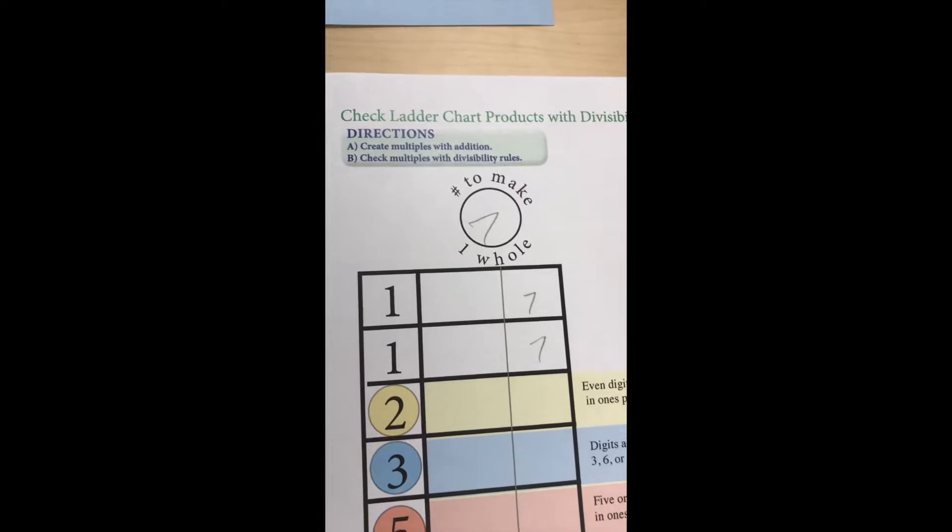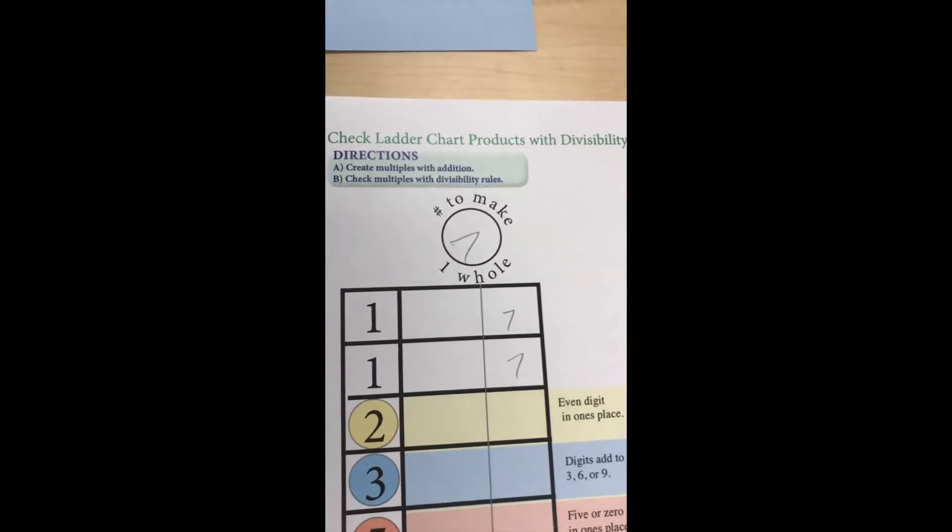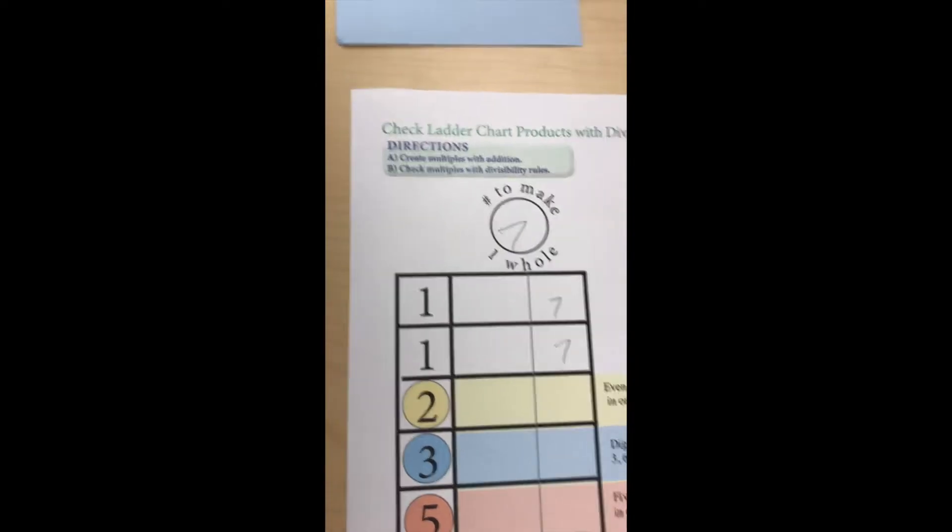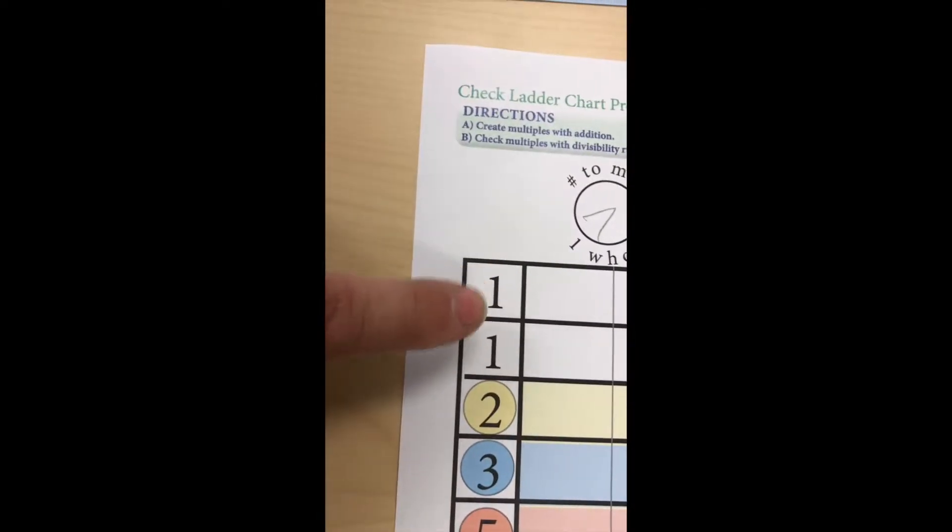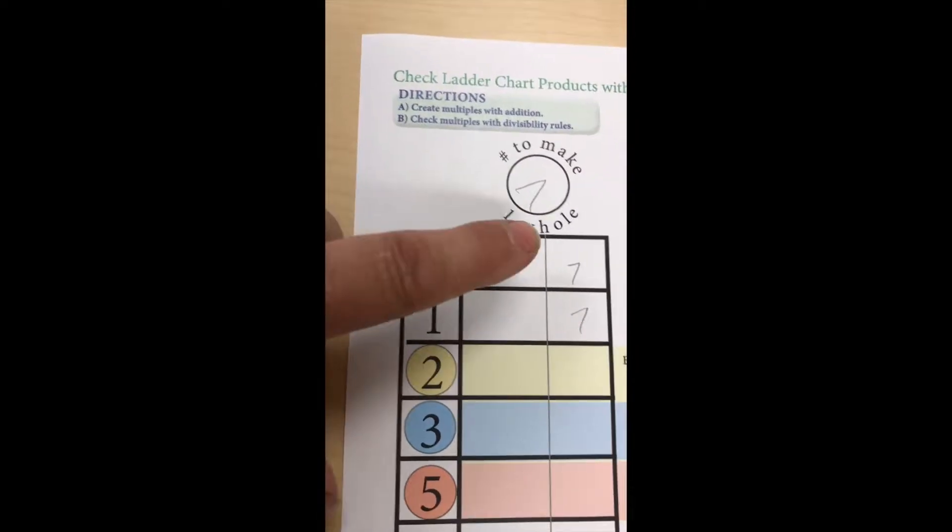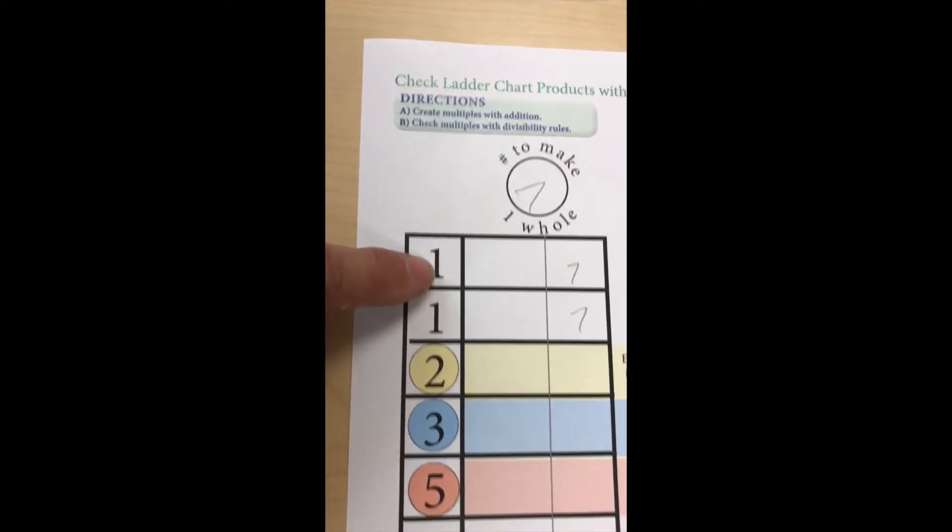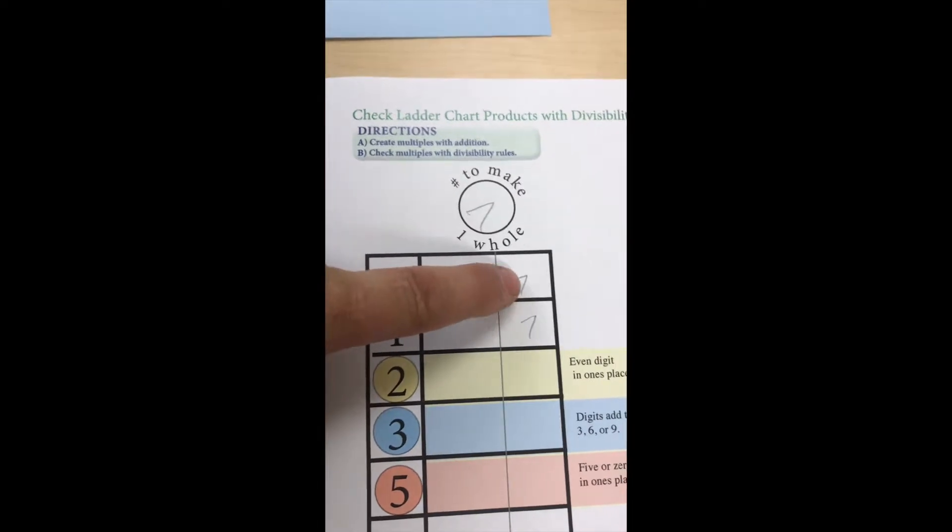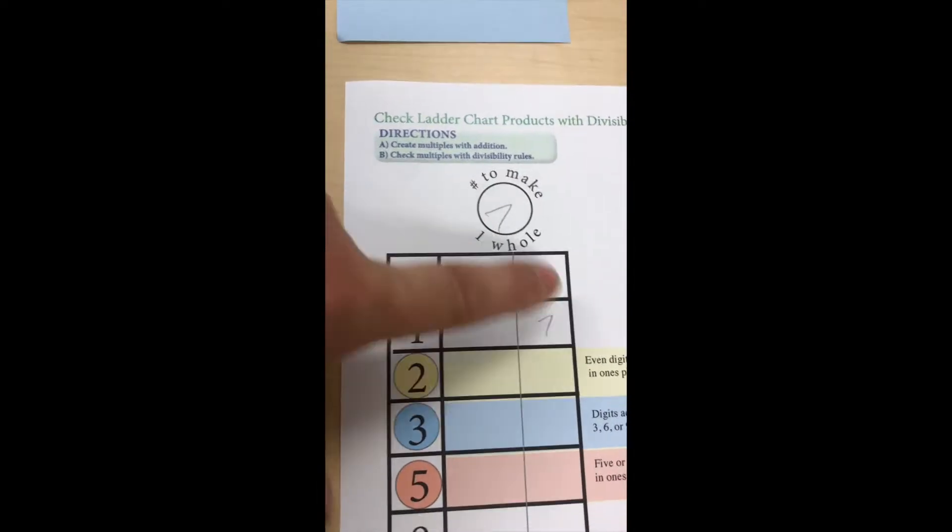All right, we're going to look at the ladder chart and check all the different products with divisibility rules. So let's make a table based on sevens. In other words, I want you to think of these numbers as weeks and these numbers as days. So one week, how many days? Seven. Yeah, and one times seven is seven, right?